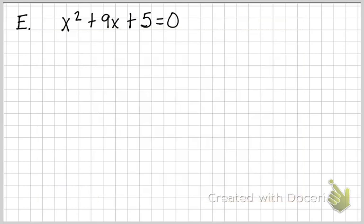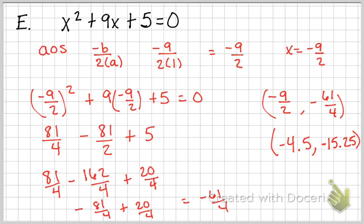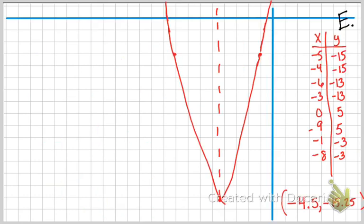I want you to try this one and see what you get. Pause the video and come back and check your work. On this one you see that you get an axis of symmetry that is a fraction, a negative fraction. And also, when you plug it in, you get a vertex that's also a fraction. So I went ahead and changed these to decimal numbers so that you could see where you could plot them.